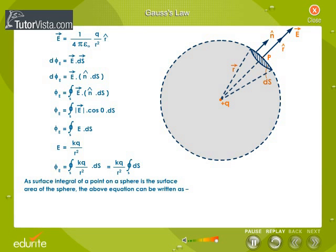But k is equal to 1 by 4 pi epsilon naught. Therefore, phi e is equal to 1 by 4 pi epsilon naught into q into 4 pi. Therefore, phi e is equal to q by epsilon naught. This is the mathematical representation of Gauss's law.